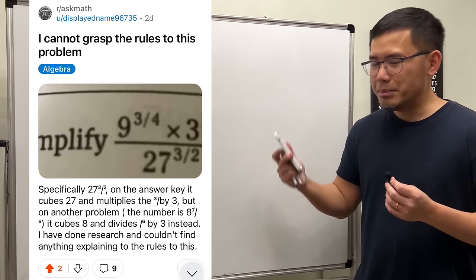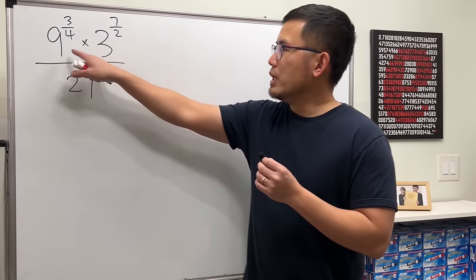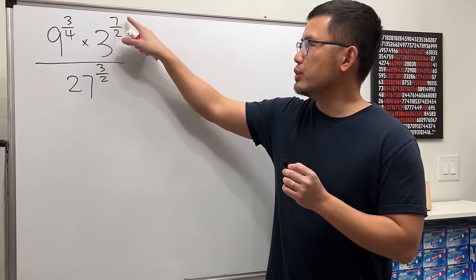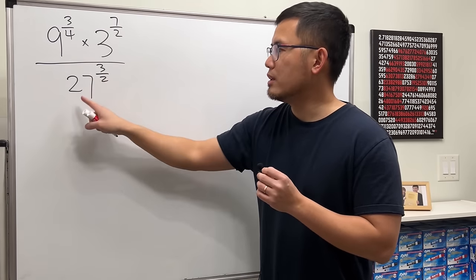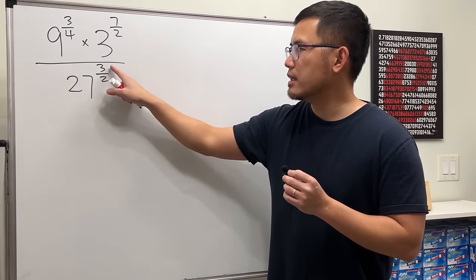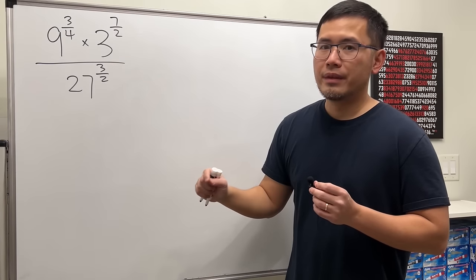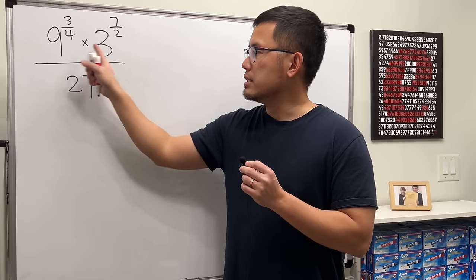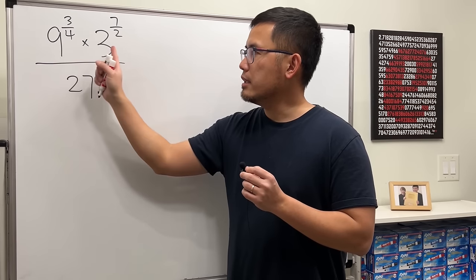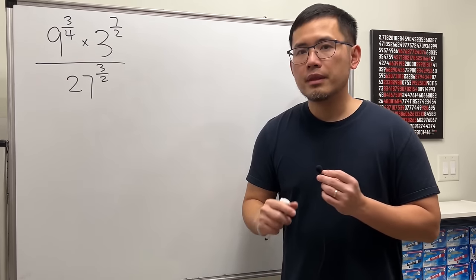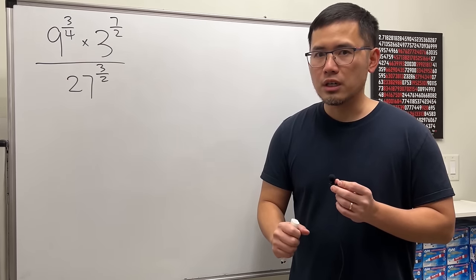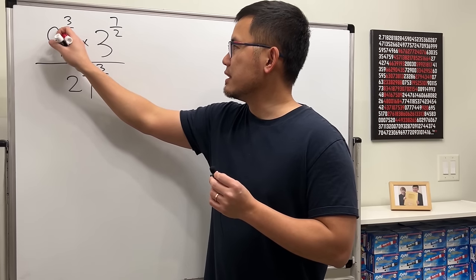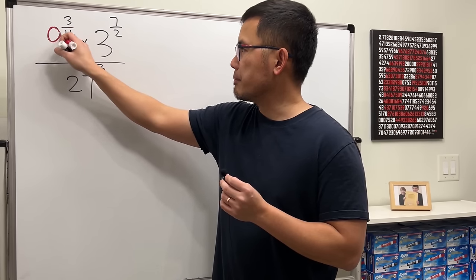So let me work this out for you. We have 9 to the 3 over 4 times 3 to the 7 over 2, all over 27 to the 3 over 2 power. The key here is that the bases 9, 3, and 27 are all powers of 3, so the first thing we are going to do is change everything to the same base.